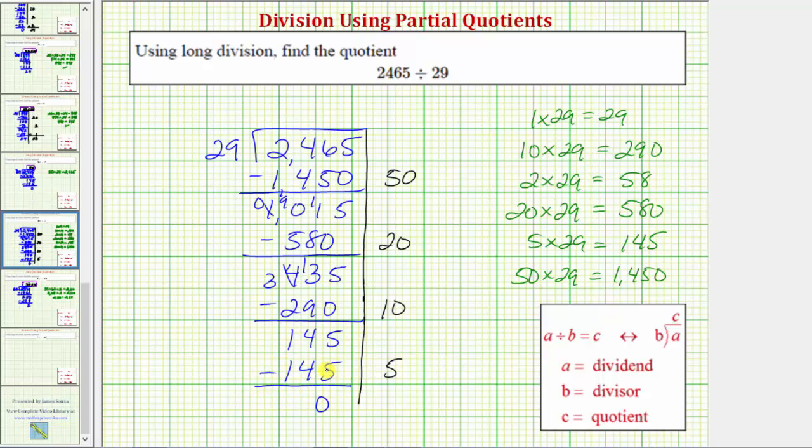Notice here we have a difference of zero, which means the remainder is zero, and therefore 29 divides evenly into 2,465.